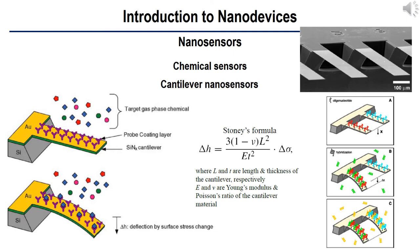As introduced in MEMS and NEMS, the cantilever module is advantageous in measuring mass and contact properties with good selectivity and sensitivity. Chemical vapors at very low concentrations can be detected based on surface stress changes generated by interactions between the cantilever probe and target molecules on their surfaces. The magnitude of surface stress changes depends on the type of interaction, including hydrogen bonding, electrostatic, and van der Waals forces. Using Stoney's formula, we can measure the surface stress change, delta sigma, from the deflection at the end of a cantilever, delta H. Surface stress is linearly proportional to the deflection.